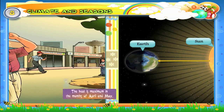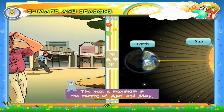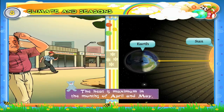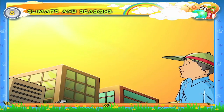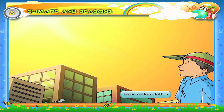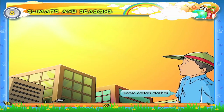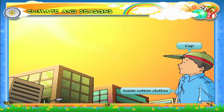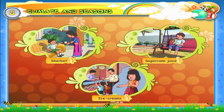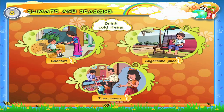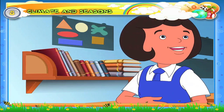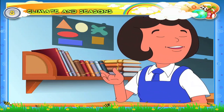The heat is maximum in the months of April and May. Therefore, we wear loose cotton clothes and a cap. We want to drink cold items like sharbat, sugar cane juice, and yummy ice creams. Children love to play in water.